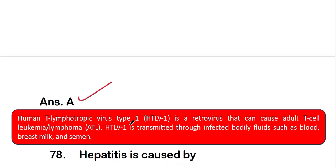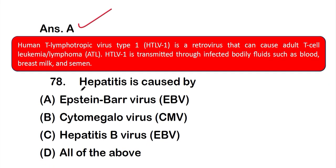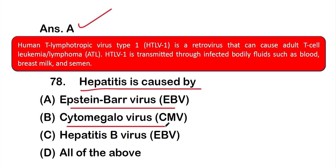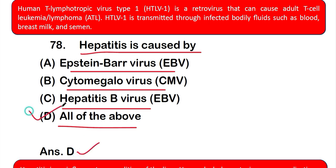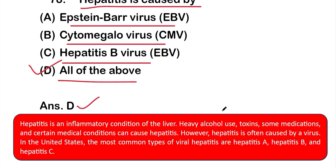Question number 78: Hepatitis is caused by — option A: Epstein-Barr virus, option B: cytomegalovirus, option C: hepatitis B virus, or option D: all of the above. The correct answer is option D. Hepatitis is an inflammatory condition of the liver and can be caused by Epstein-Barr virus, cytomegalovirus, and hepatitis B virus. In the United States, the most common types of viral hepatitis are hepatitis A, B, and C.